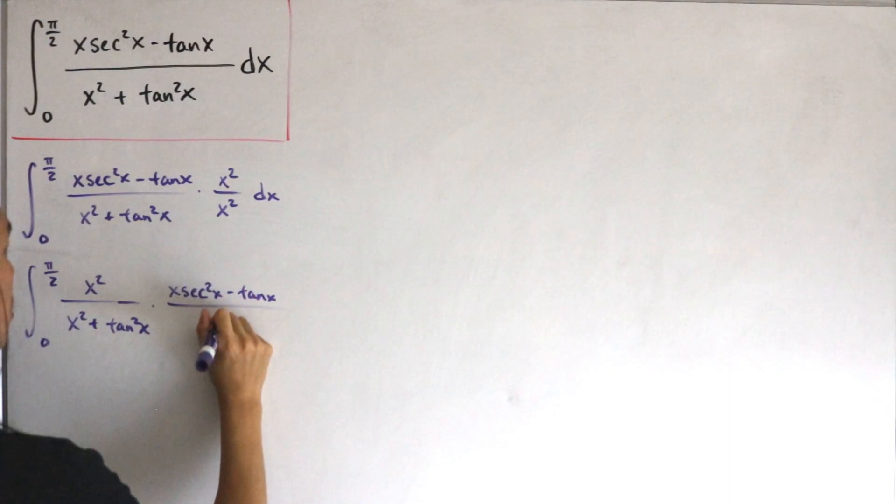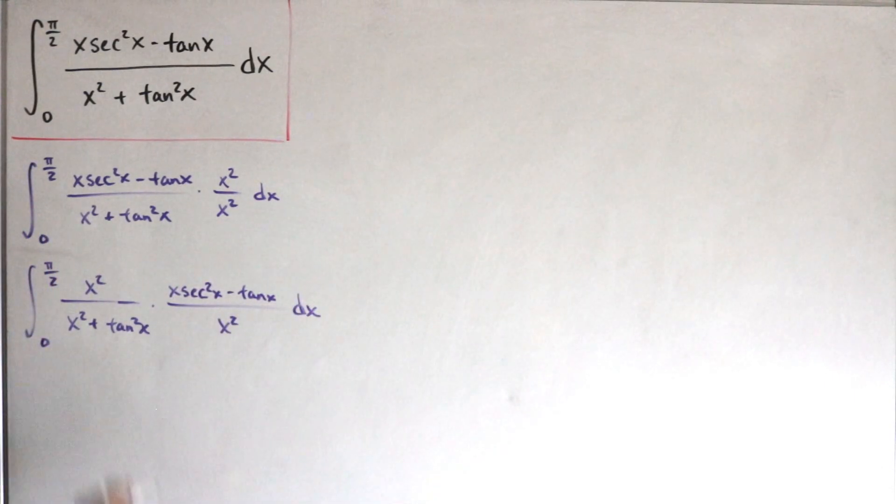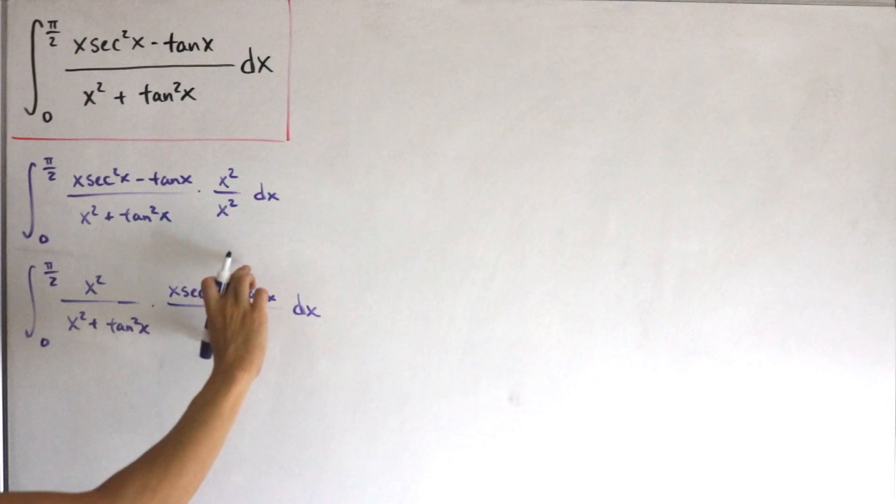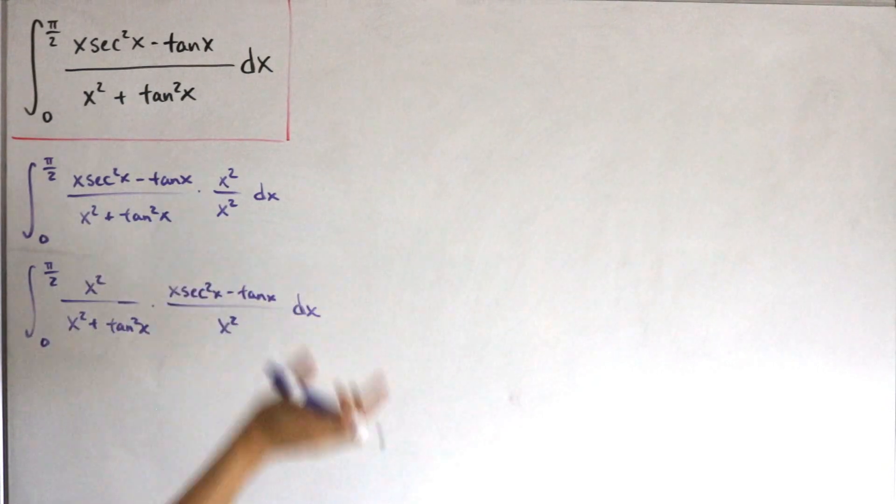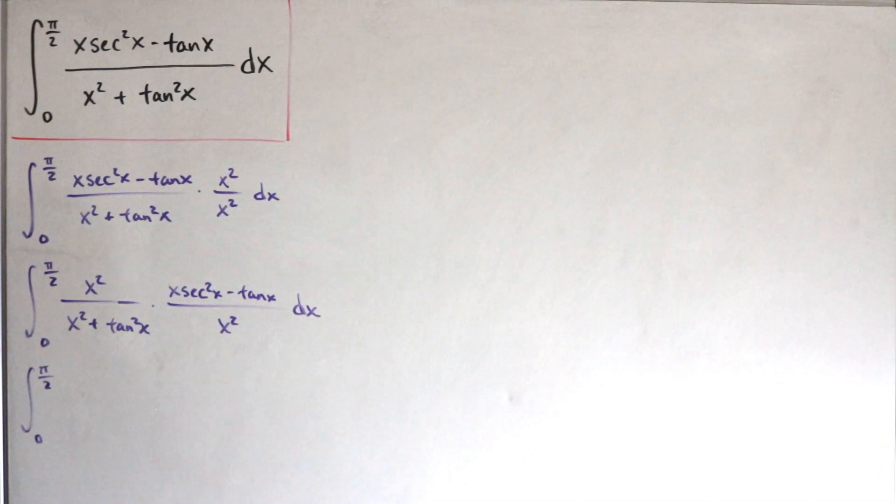And then all this divided by x², followed by dx. So next, disregarding this function over here, let's divide x² to both sides. Our rewritten integral will have 1 divided by 1 + tan²x.